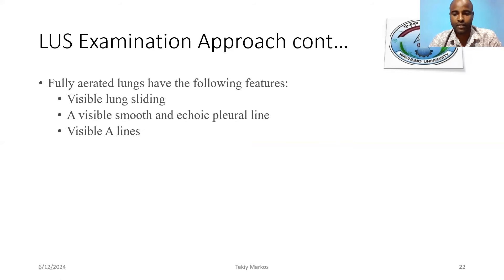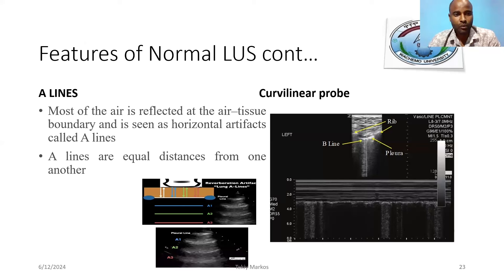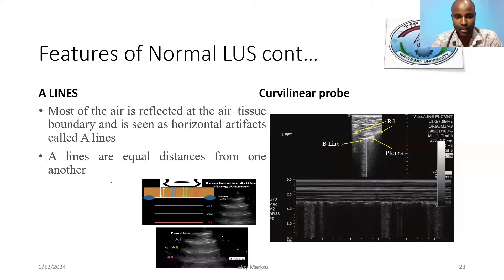Fully aerated lungs have the following features on lung ultrasound: visible lung sliding, which is a marching band pattern; a visible, smooth, echo-bright pleural line; and visible A-lines. Most of the air is reflected at the air-tissue boundary as horizontal artifacts called A-lines. A-lines are equidistant from one another.